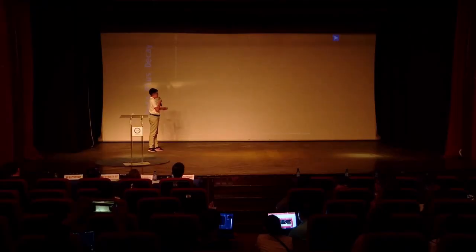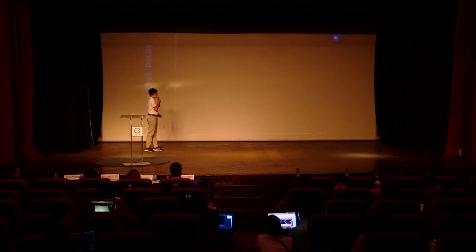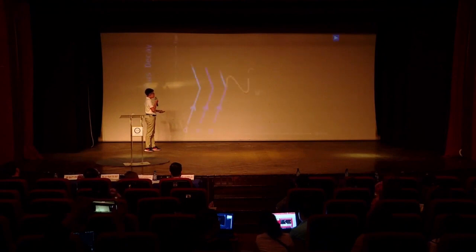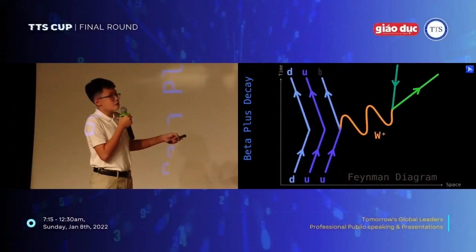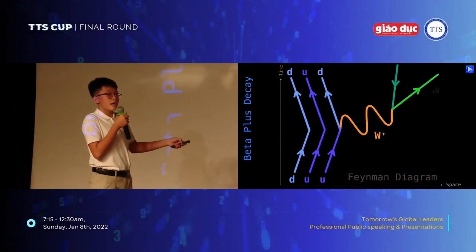Over here we have space and time. We have a proton consisting of two up quarks and one down quark. This up quark will emit a W-plus boson and transform into a down quark. The W-plus boson will then decay into a positron and an electron neutrino.